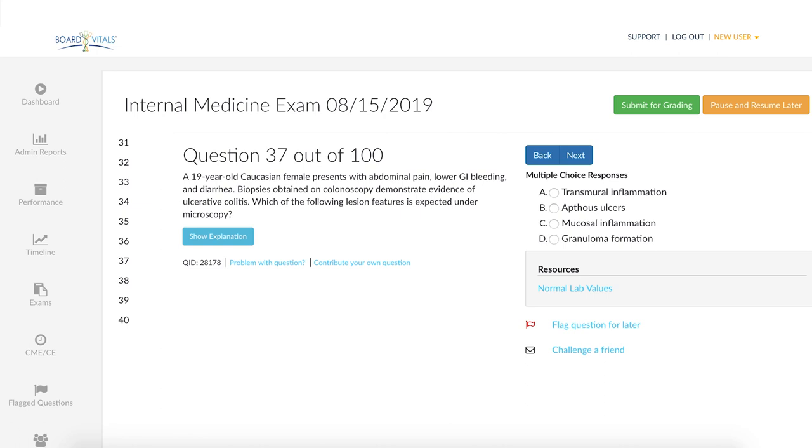Answer choices are A, transmural inflammation, B, aphthous ulcers, C, mucosal inflammation, or D, granuloma formation.